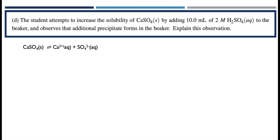If I have solid calcium sulfate, it can dissociate into calcium ions and sulfate ions, and it would establish an equilibrium. By adding the sulfuric acid, I'm essentially adding a source of sulfate ion, which is a product. If I add products, I'm going to make the reaction proceed in the reverse direction in order to reestablish equilibrium.